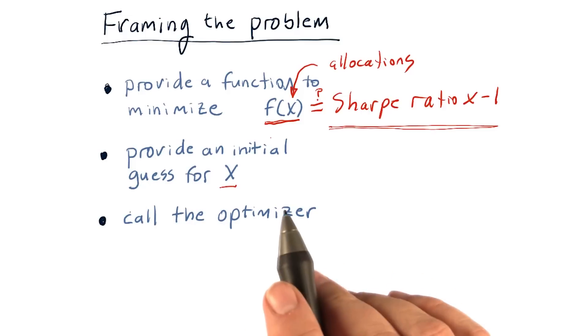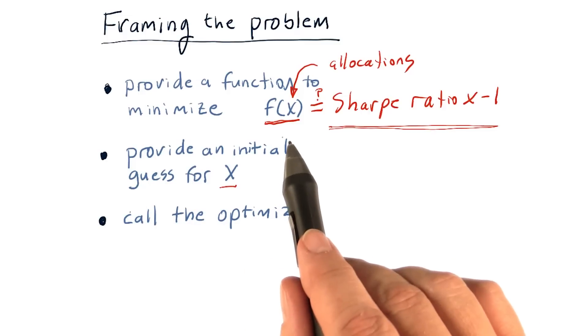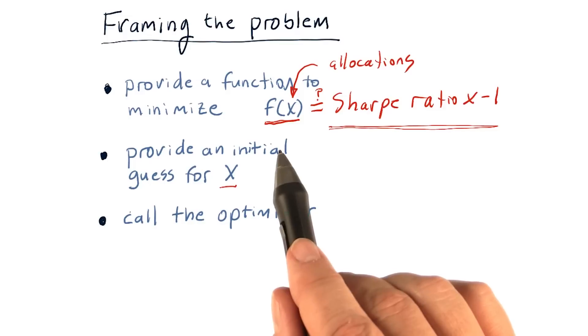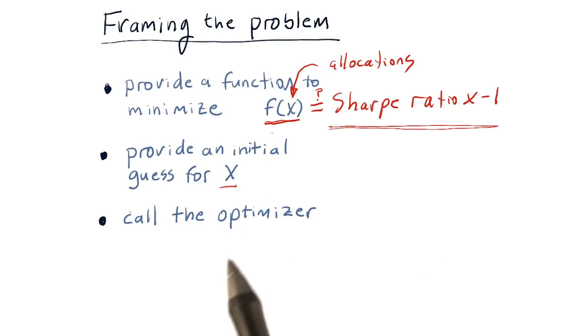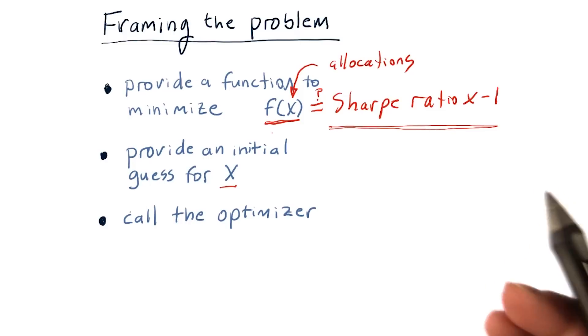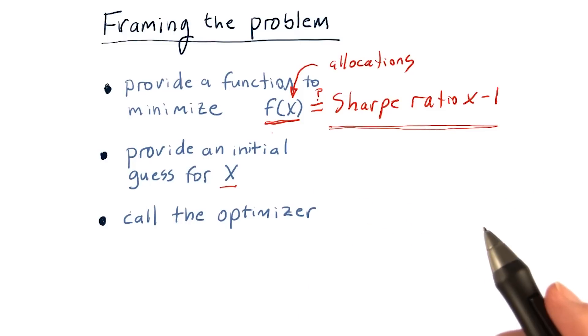And remember, x can have multiple dimensions. So, each dimension of x here is an allocation to each of the stocks. So, if we're trying to solve for a portfolio of four stocks, x will have four dimensions. And the value for each of those dimensions is the percentage of funds to allocate to each of those stocks.